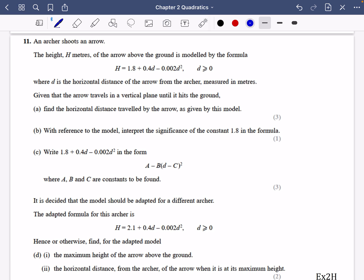Where d is greater than or equal to zero, where d is the horizontal distance and h is the height above the ground. Given that the arrow travels in a vertical plane until it hits the ground, it's going to be doing some kind of shooting pattern like this.